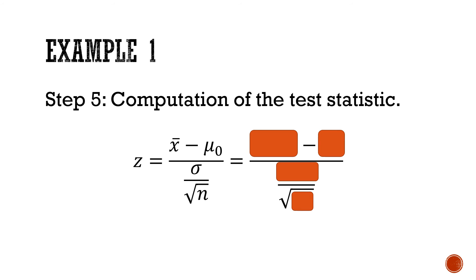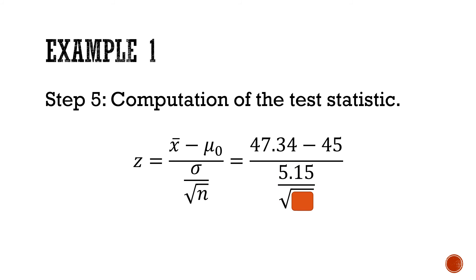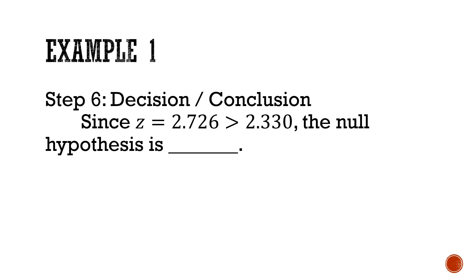Now the computation. z equals (x-bar minus mu) divided by (sigma divided by the square root of n), which is (47.34 minus 45) divided by (5.15 divided by the square root of 36). Entering these values into the calculator, we arrive at z equals 2.726. Since z equals 2.726 is greater than the critical value of 2.330, we proceed to the decision step.